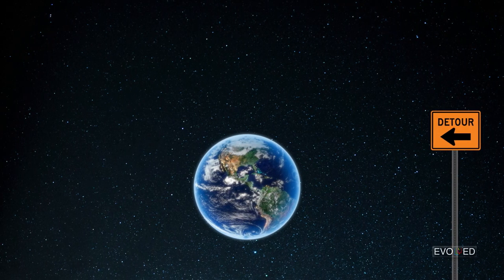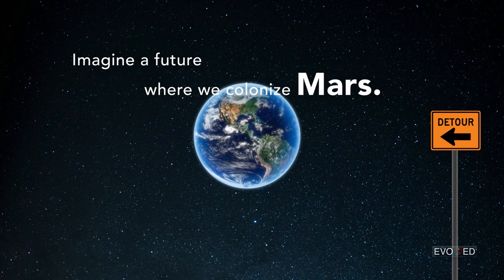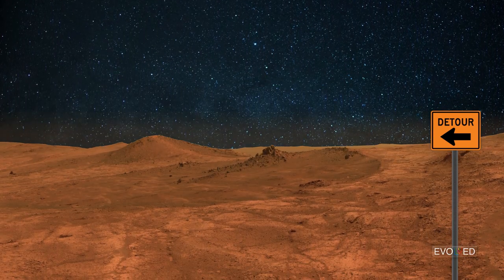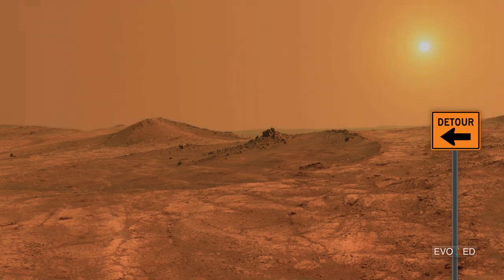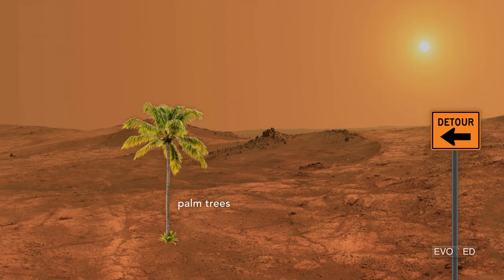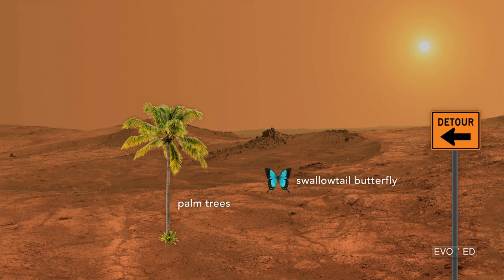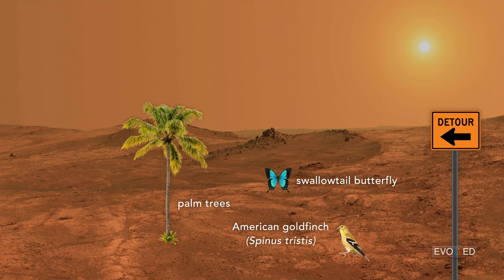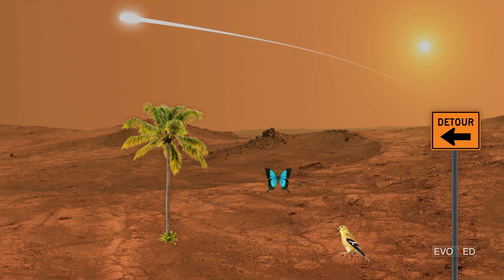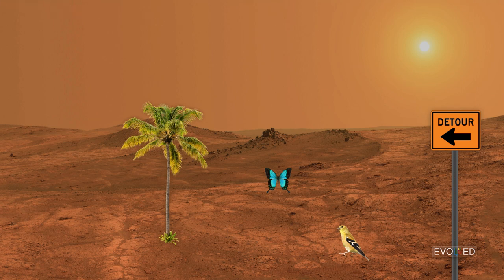Consider this. Imagine a future where we colonize Mars. And imagine that we take a few species from Earth along with us. Let's say we take palm trees. We take a species of swallowtail butterfly, because they're gorgeous. We take the American goldfinch, Spinus tristis, because it looks good, and it sounds good. These three species are not that related. There's a plant, an insect, and a bird. Then imagine, after we go to Mars, that Earth gets destroyed by a passing comet. This is a tragedy of a story. But anyhow,